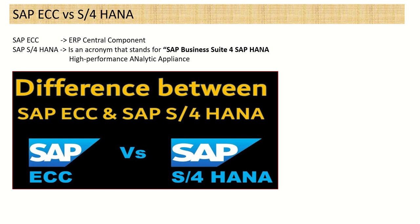Both SAP ECC and S4 HANA are products of SAP. SAP ECC stands for ERP Central Component, which is the old product of SAP. And S4 HANA is SAP Business Suite for SAP HANA, where HANA stands for High Performance Analytic Appliance. So both products are from SAP.